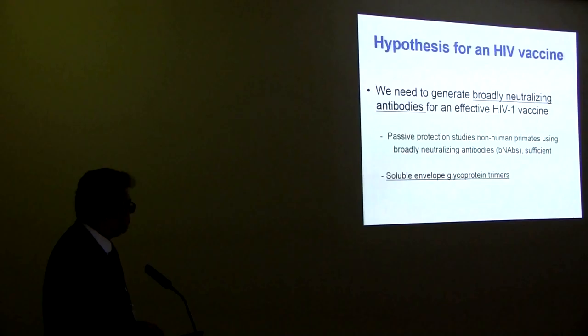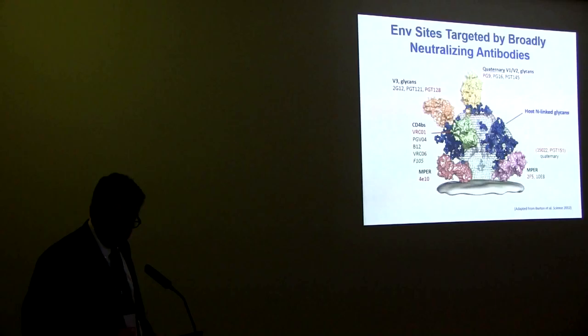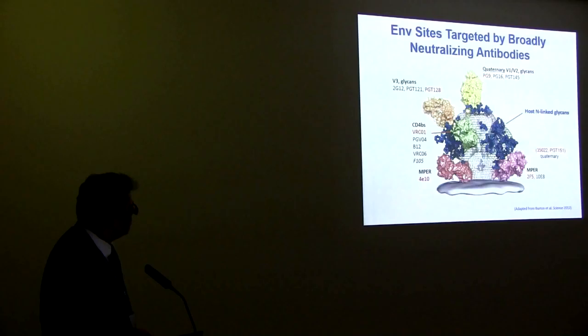So the hypothesis we're really testing is that we need to generate broadly neutralizing antibodies for an HIV vaccine. The problem is it's a highly variable virus. Most of the variable loops up here are different, both in sequence and glycan and N-link glycan array. So we try to focus on things like the conserved CD4 binding site. The reason antibodies are of interest is by numerous passive protection studies in the best model that we have, which is non-human primates challenged with SHIV, which is a chimeric virus between SIV and HIV, they protect. They're completely sufficient as long as you have enough antibody.